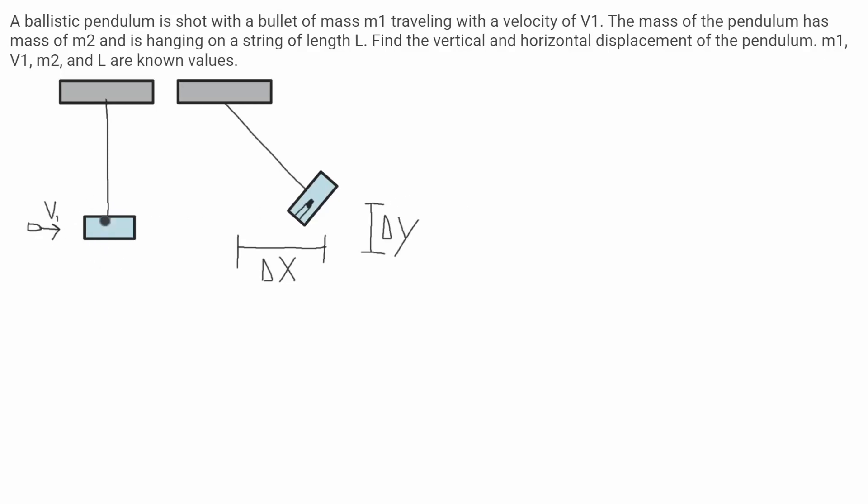This problem involves a pendulum at the end of a rope and a bullet that's going to strike it. The bullet will cause it to swing up with horizontal and vertical displacement that we need to find. I'm going to start by drawing the diagram for what this would look like in its uppermost position.